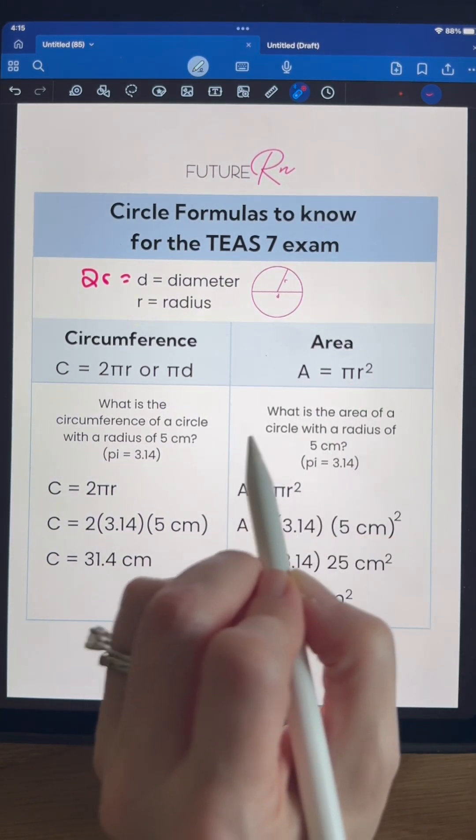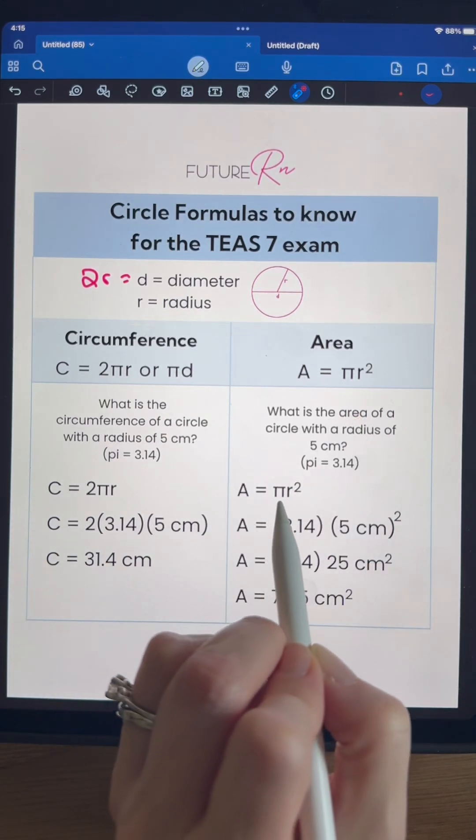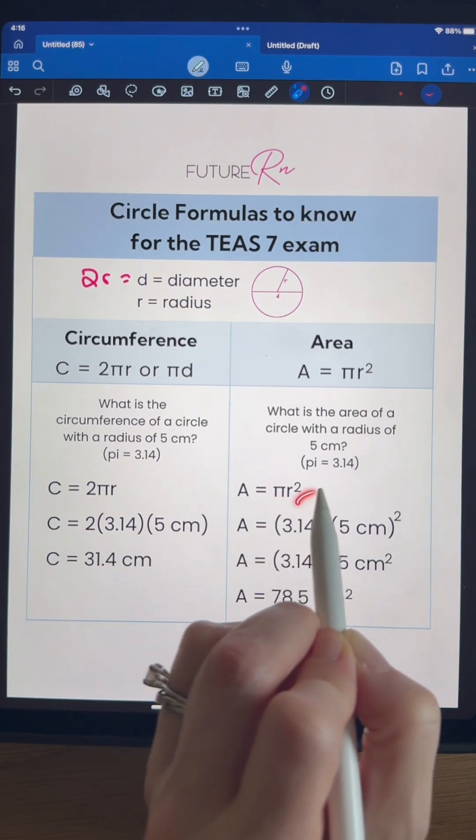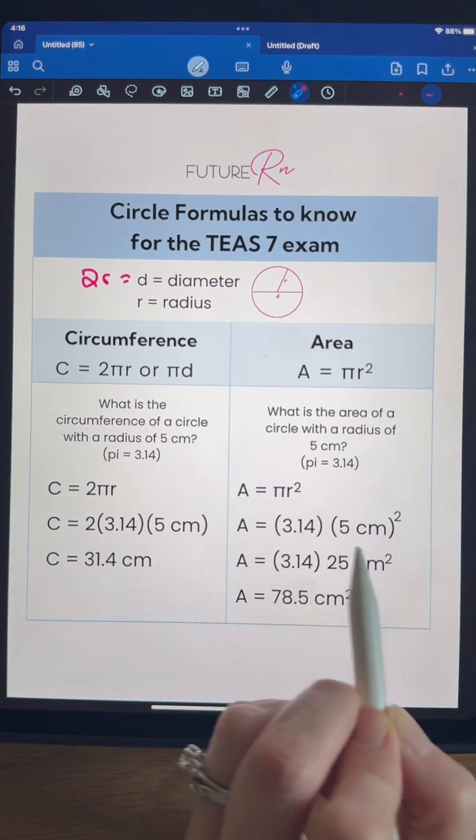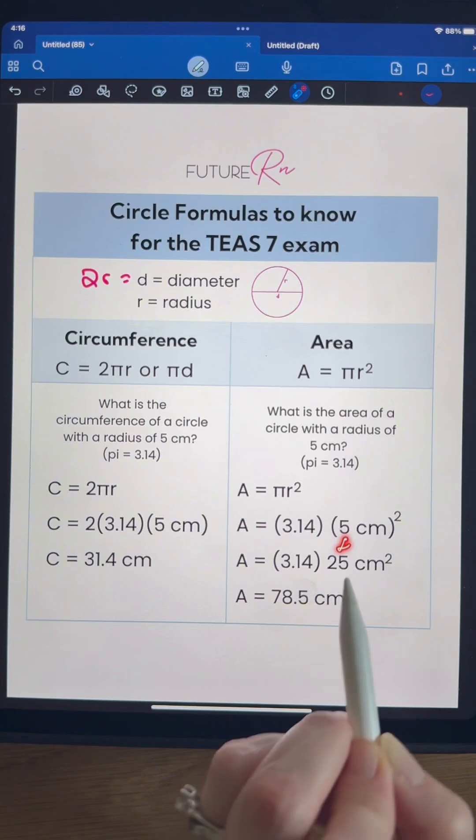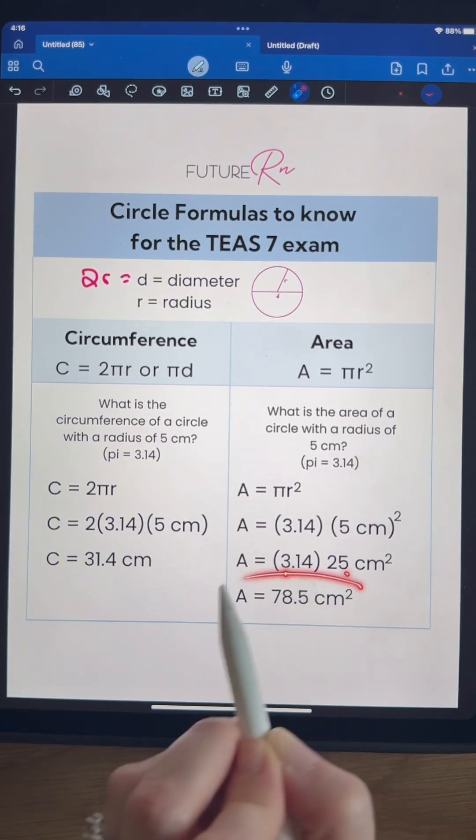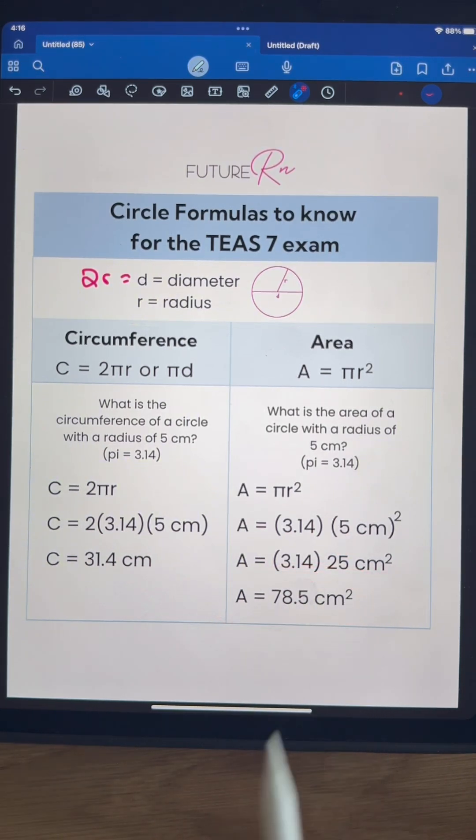So we do the same problem, but we find the area instead. We have pi R squared. Pi is 3.14 here. The radius was 5, so we need to square that 5. 5 times 5, right, is 25. Then finish off your multiplication times pi, and we get a final answer of 78.5 centimeters squared.